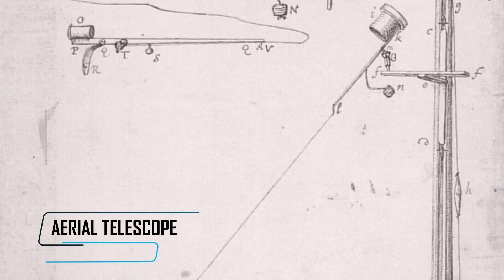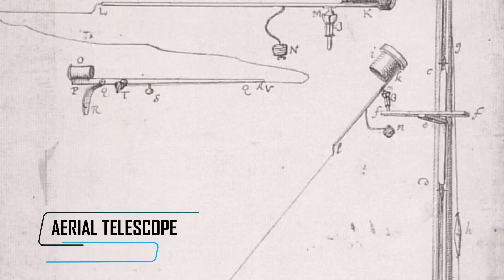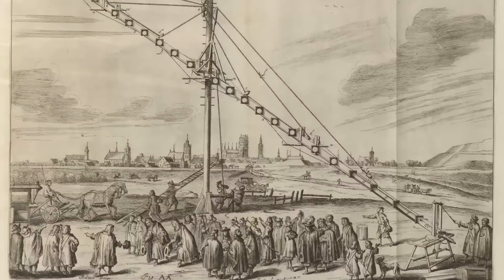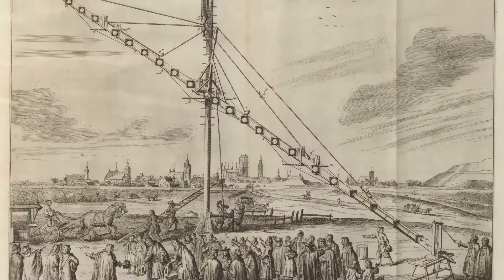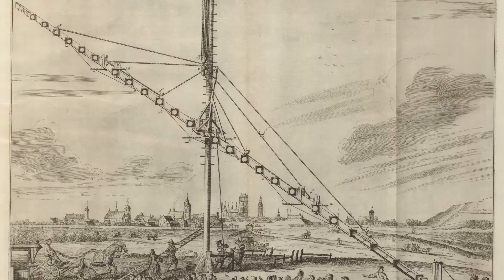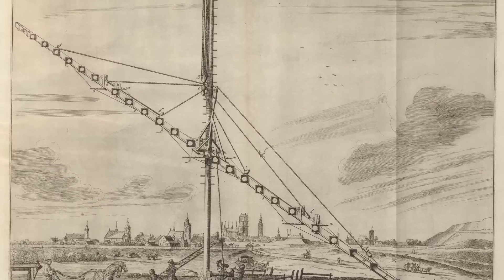This type of telescopes were called aerial, reaching the extreme length of 64 meters in one of Huygens' projects. Therefore, these objects weren't practical to use and neither to build. As a matter of fact, modern telescopes are totally different.